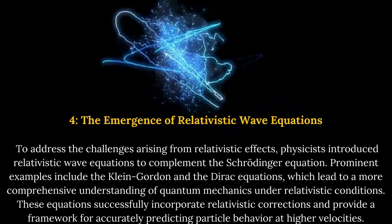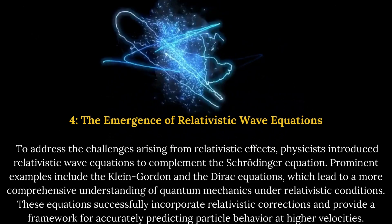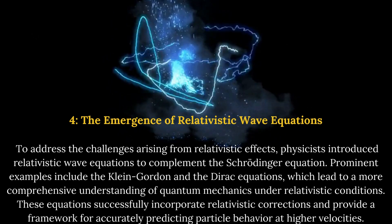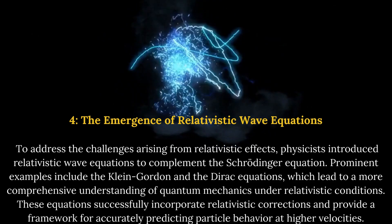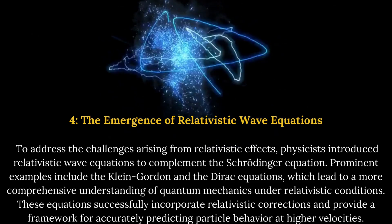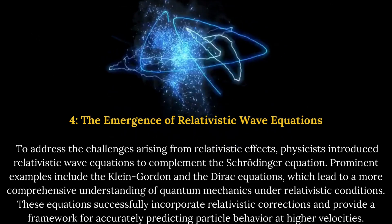Prominent examples include the Klein-Gordon and the Dirac equations, which lead to a more comprehensive understanding of quantum mechanics under relativistic conditions. These equations successfully incorporate relativistic corrections and provide a framework for accurately predicting particle behavior at higher velocities.